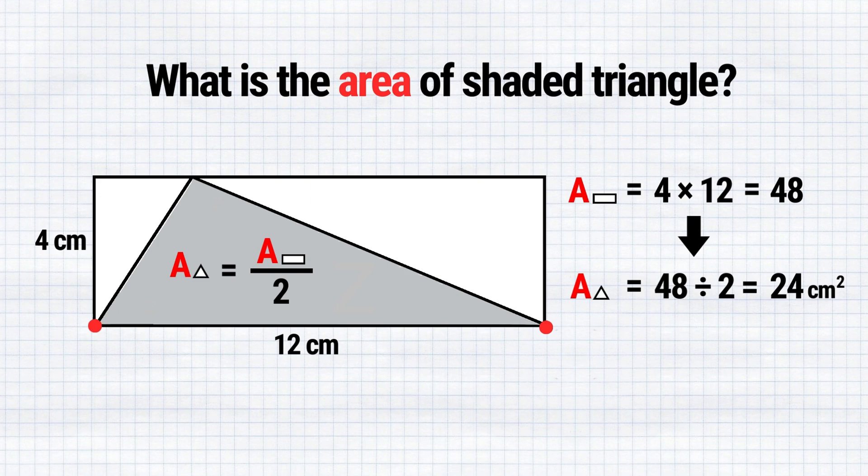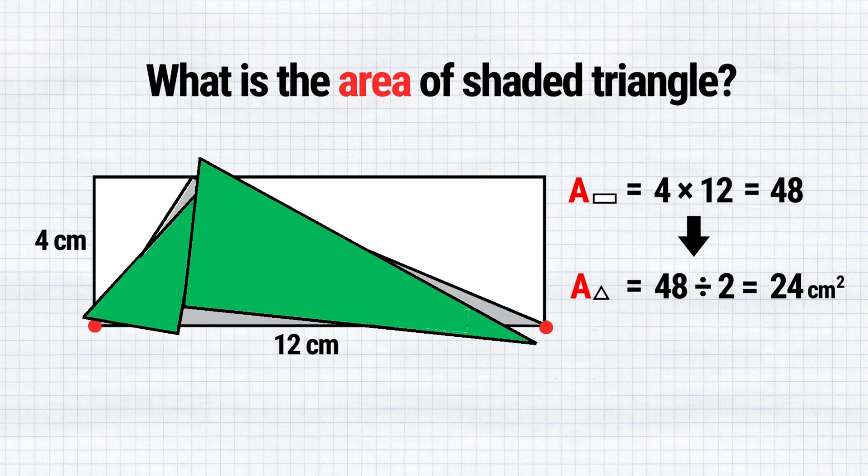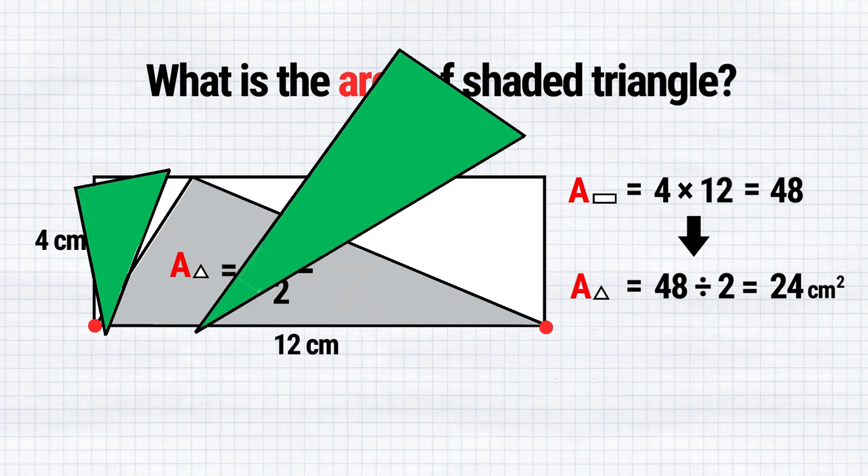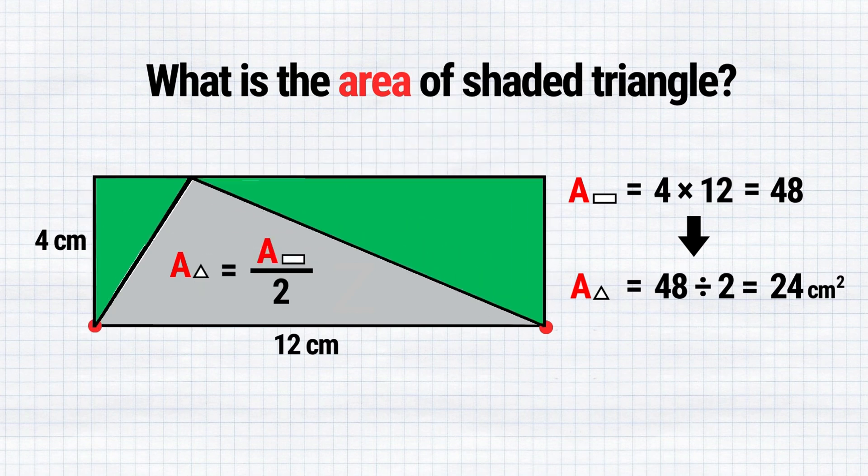I will divide our shaded triangle into segments and make them green. Then, I will rotate each green segment by 180 degrees and position them to fill each corresponding white portion of the rectangle.